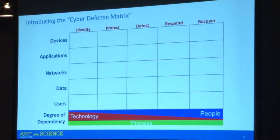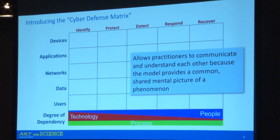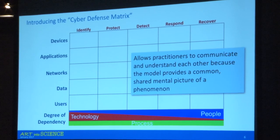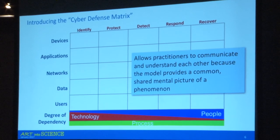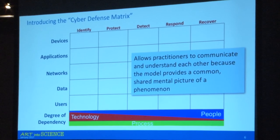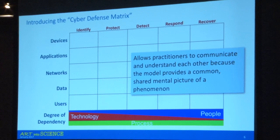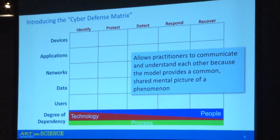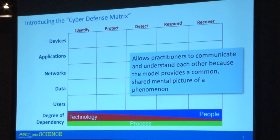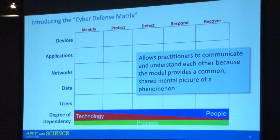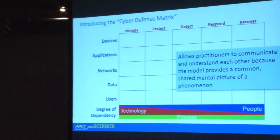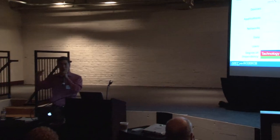One of the key things we want from a model is the ability to communicate with each other using a common shared mental model of a certain phenomenon — that phenomenon being cybersecurity and how we do cybersecurity. This five-by-five matrix, hopefully, is easy to remember. One dimension is the cybersecurity framework, which you should commit to memory. The other dimension is things we care about, which are fairly intuitive.